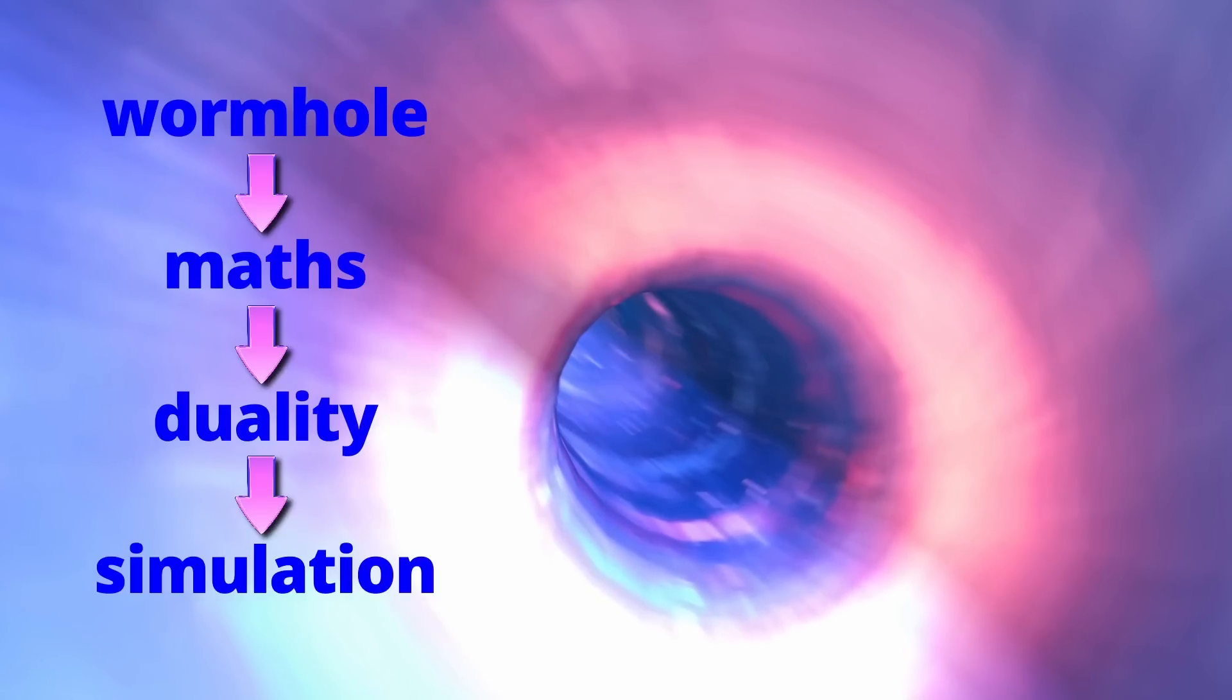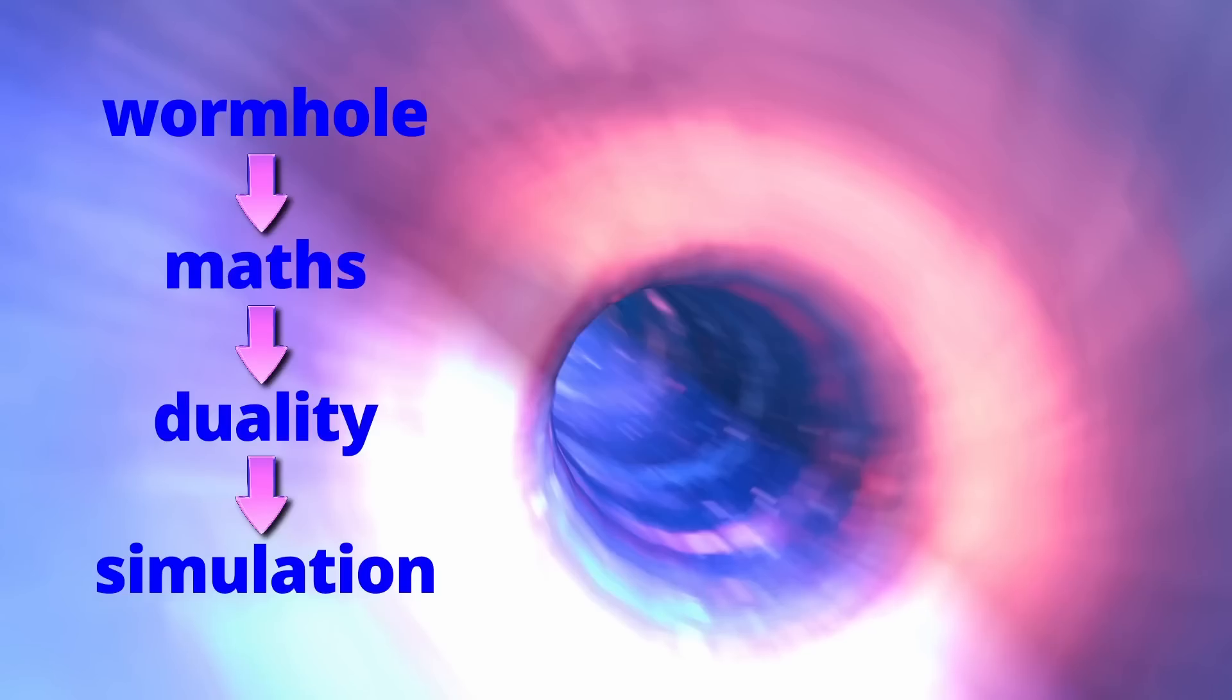The wormhole stuff wasn't just a simulation, it was a simulation of a mathematical duality. For this, you first have to reformulate the mathematics, and then you simulate that. But because of this mathematical reformulation, the simulation itself doesn't physically resemble the real thing, so there wasn't anything like a wormhole in the quantum computer.